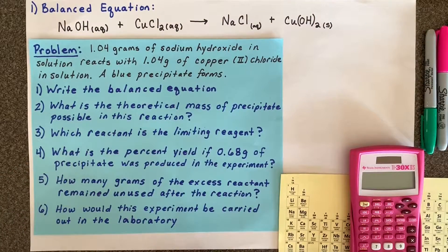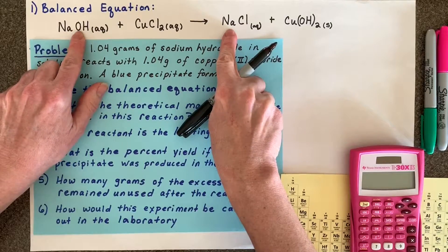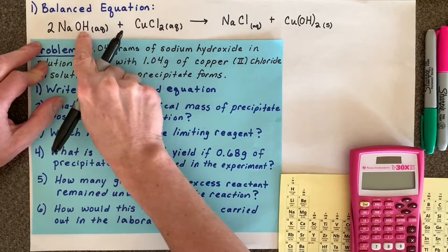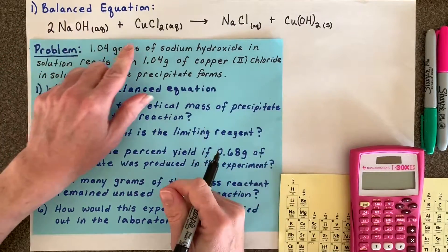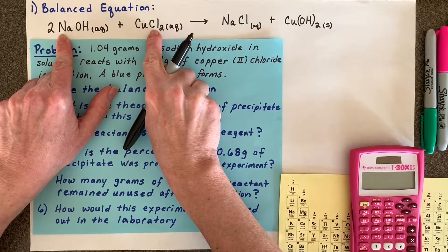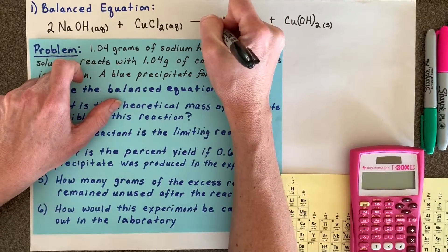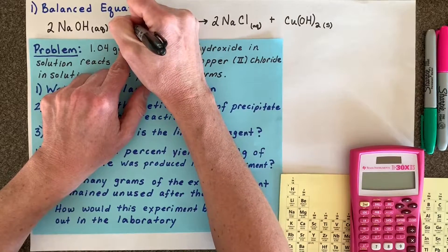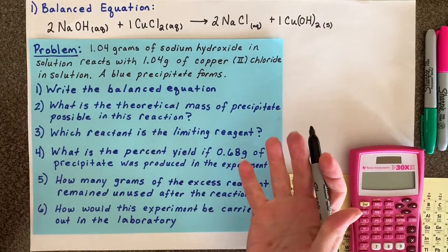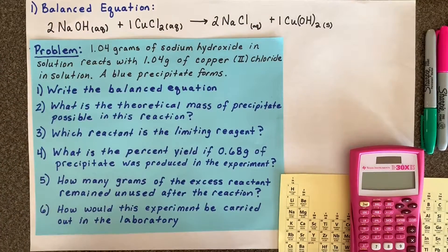The last step is balancing the equation. You have one sodium ion on both sides. There's one hydroxide here and two here, so we're going to need to put a coefficient of two in front of the sodium hydroxide. That makes two sodium, but there are two chloride here, so we put a coefficient in front of the NaCl. There's your balanced equation with a 2 to 1 to 2 to 1 mole ratio for your reactants and products.